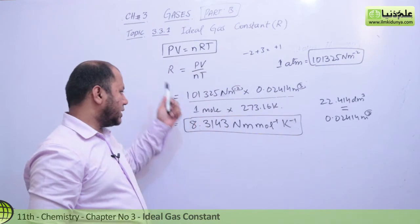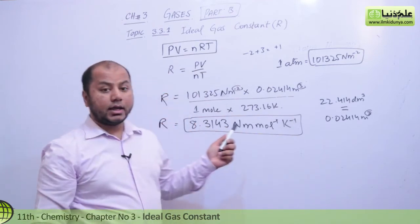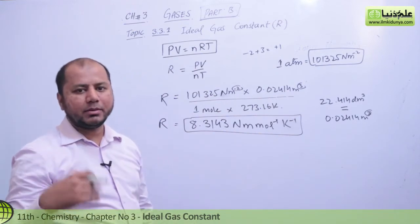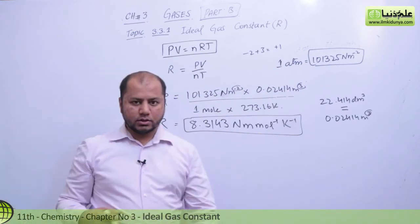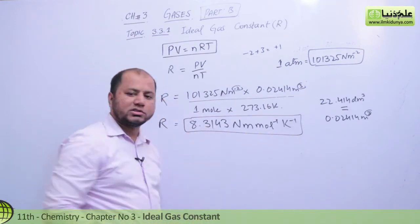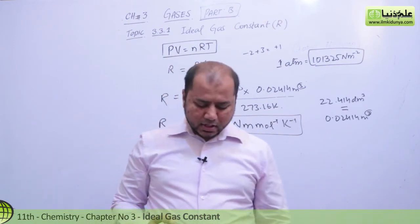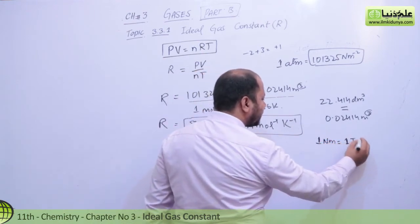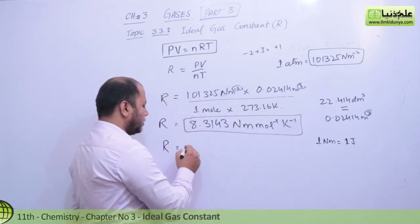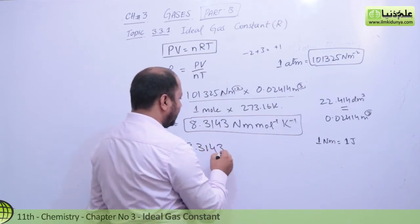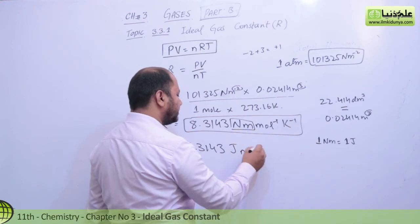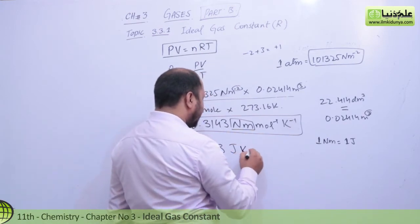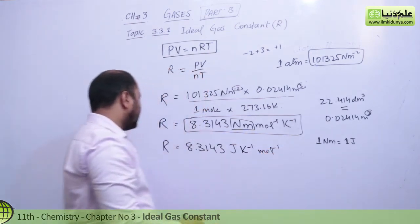That's the unit for R if you are using it in the form of Newton per meter square and cubic meters — meaning you took gas volume in meter cube, not dm³, and pressure in Newton per meter square. Students, this constant value comes out. Now you can convert this value from Newton·meter into Joules, because 1 Newton·meter equals 1 Joule. So R = 8.3143 Joules per mole per kelvin.